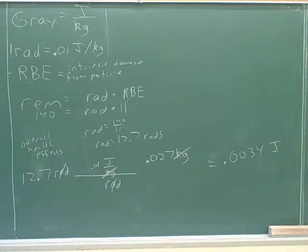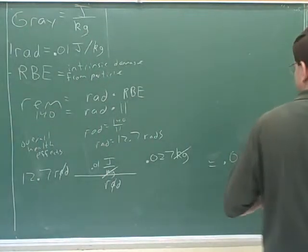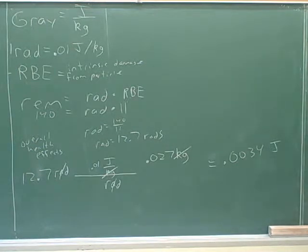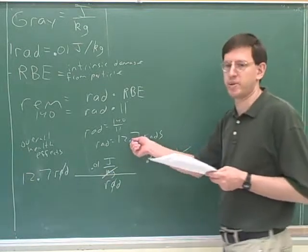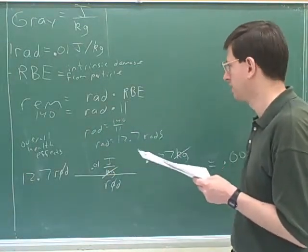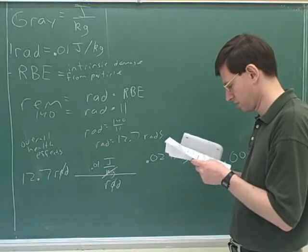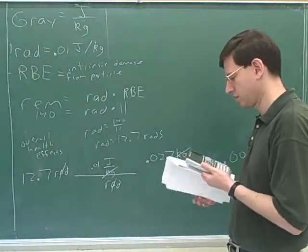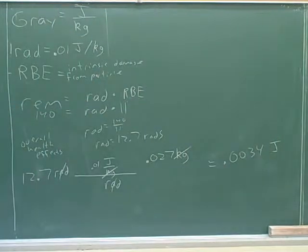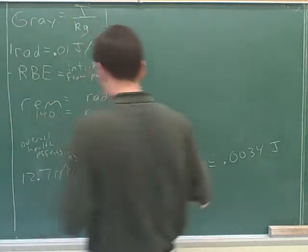So the RBE is 1.5. That's what they told us. That's right. And then it says the same rad dosage. So that's what we got in part A. That's right. 12.727. That's what we figured out in part A. That's right. 12.7. So that equals REM. Good. So that is 15.24. So what was the overall health effects? 19.05. That sounds right.